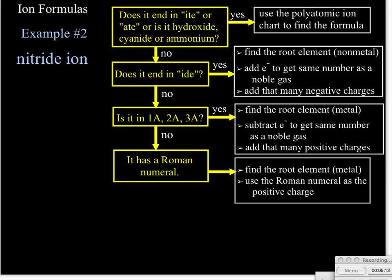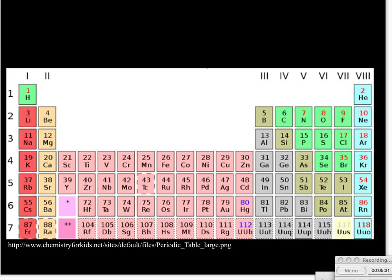Next example is the nitride ion. So now we look and say, well, it doesn't end in -ite or -ate. And it's not hydroxide or cyanide or ammonium. And that looks kind of like an element root there. So we find the element root and we say, okay, the root of that is nitrogen. So now we need a periodic table. We're going to take a look at the periodic table and we find nitrogen on the periodic table. It's over there on number 7. And we say, well, numerically, what's the nearest noble gas? Because if we can get the same number of electrons as a noble gas, it's a very stable arrangement of electrons. So we look and say, well, the closest noble gas numerically is neon with 10.